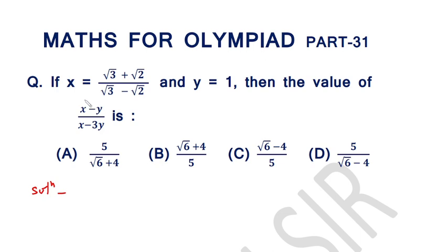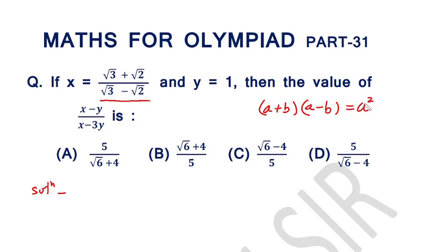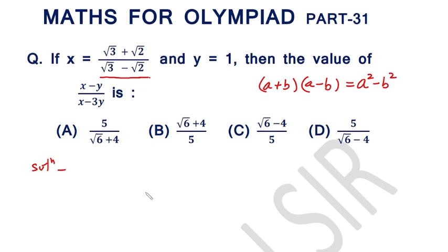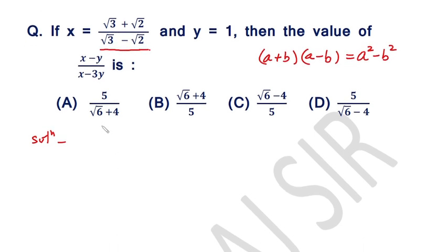First of all, we will rationalize the value of x. For this we will use the identity a plus b into a minus b equal to a square minus b square. Rationalizing and simplifying the value of x: x is equal to square root of 3 plus square root of 2 over square root of 3 minus square root of 2.